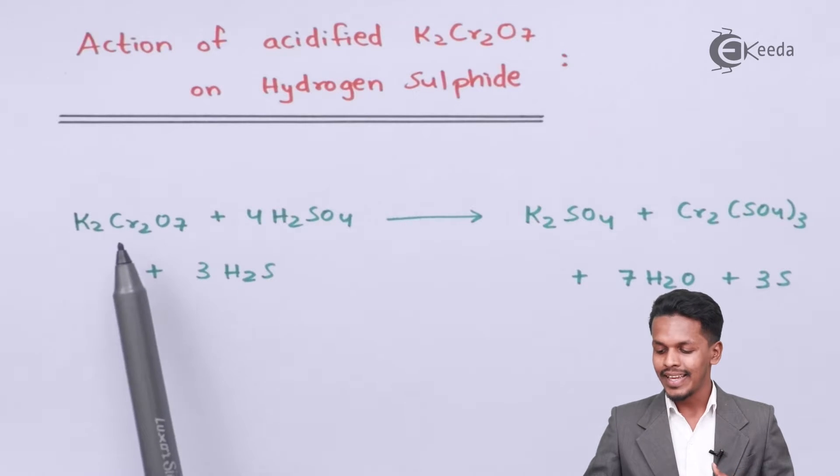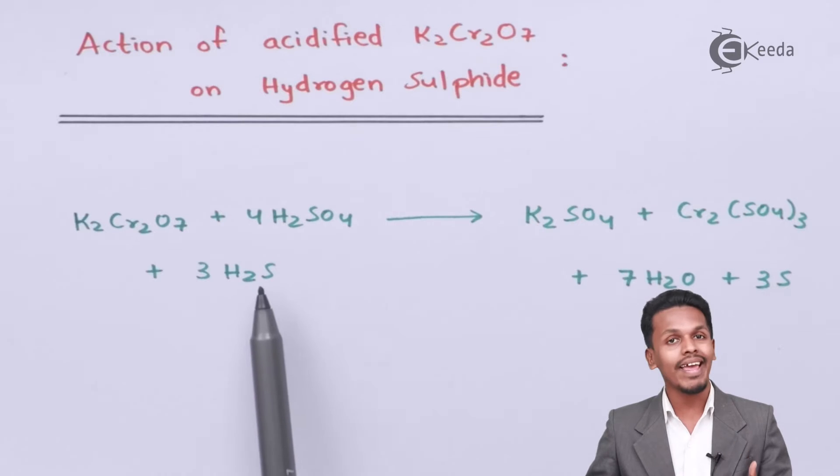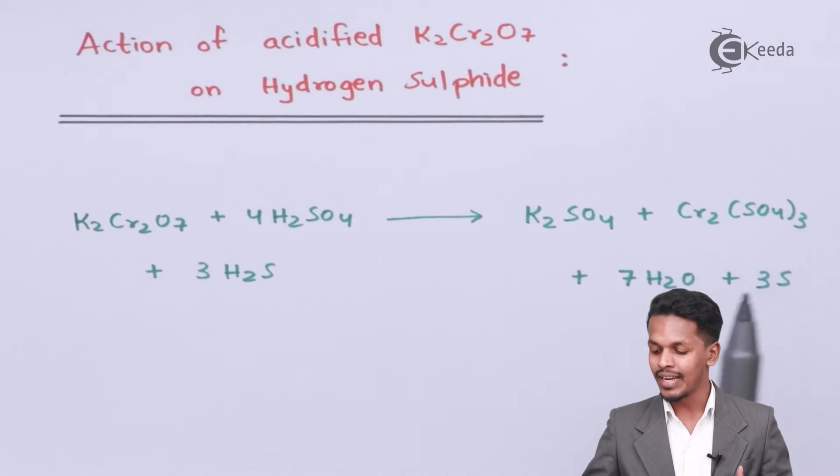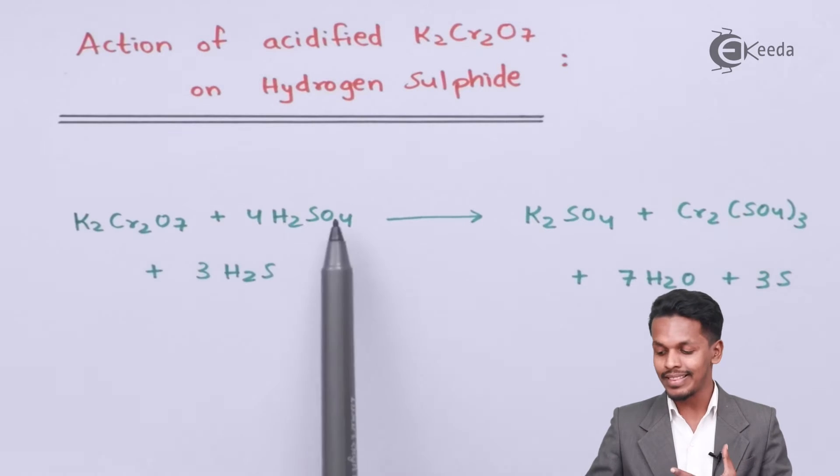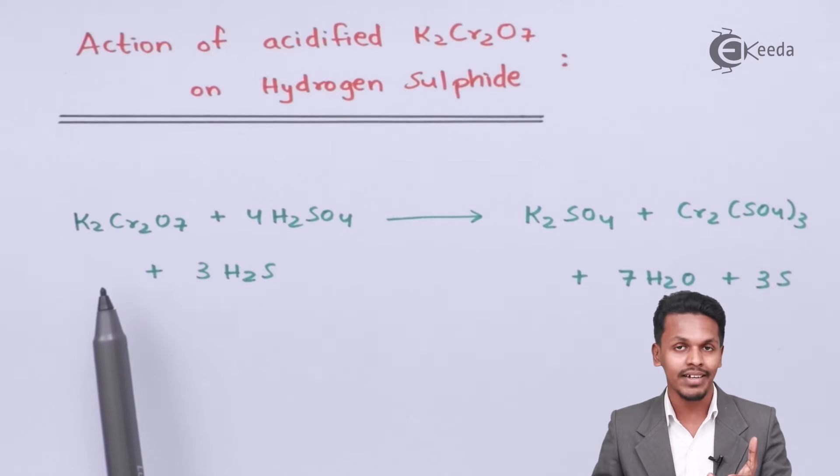So in this case, K2Cr2O7 oxidizes H2S to form sulfur. K2Cr2O7 in acidic conditions has a solution that is orange-red in color.